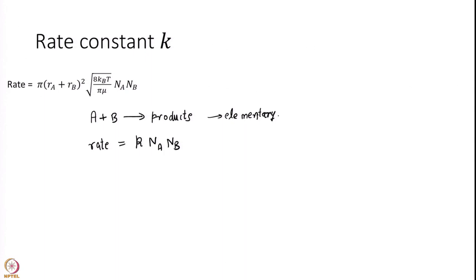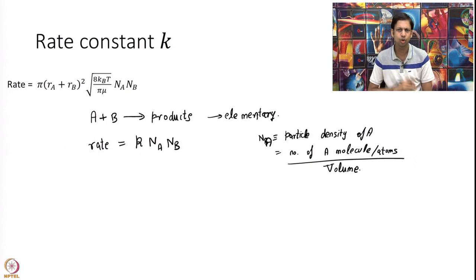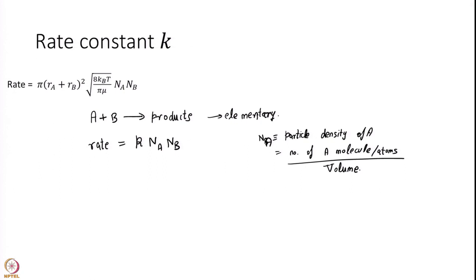My rate I can write as k times na times nb. You might be wondering why I'm not using concentration, but it's really the same thing, just a matter of change of units. na is the particle density, the number of A molecules or atoms divided by volume, and similarly for nb. That's effectively the same as concentration.